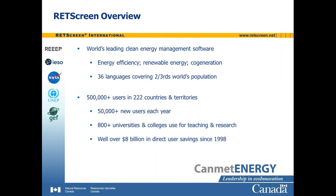RETScreen is a clean energy management software system for project feasibility analysis and ongoing energy performance analysis. It is the world's leading clean energy management software. It handles energy efficiency, renewable energy and cogeneration, available in 36 languages covering two thirds of the world's population. RETScreen has over half a million users in every country and territory of the world, with over 50,000 new users being added every year. At least 800 universities and colleges use RETScreen for teaching and research, and RETScreen has been responsible for well over $8 billion in direct user savings since 1998.